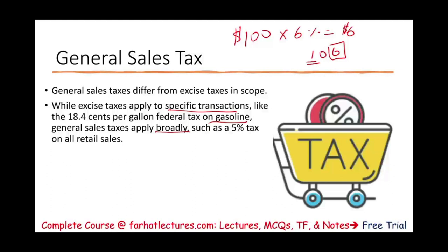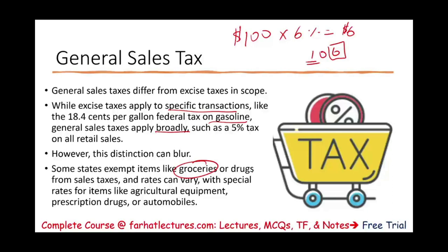Some states exempt groceries or drugs from sales tax because they are considered essentials. Rates can vary with special rates for items like agricultural equipment, prescription drugs, or automobiles, depending on what behavior the state wants to encourage or discourage.